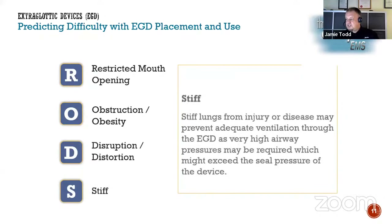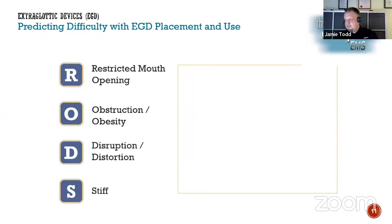And finally, S — stiff lungs. Our asthmatics, our COPD patients — these people may require high airway pressures, and they're also super high risk. If we are providing high pressure, we need to do that incredibly carefully. That's our RODS mnemonic.